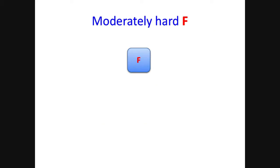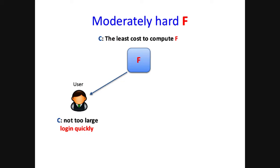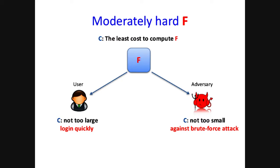The answer is that we should use a moderately hard function F. We let C be the least cost to compute function F. On the one hand, we hope that C is not too large, so that the user can log in quickly. On the other hand, we hope C is not too small, so that it's hard for an adversary to execute a brute-force attack with low cost. So what is the right cost metric C? Should it be time, memory, or energy?